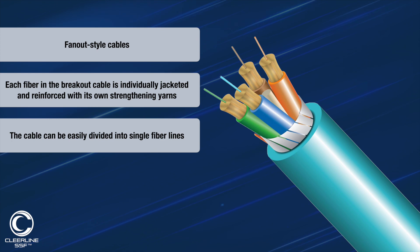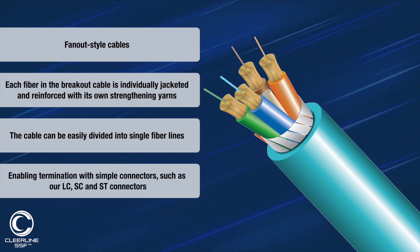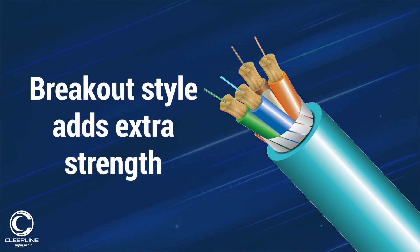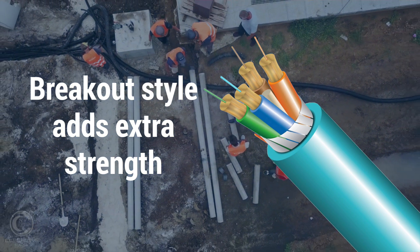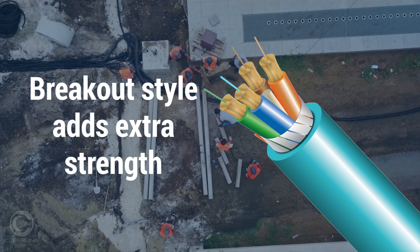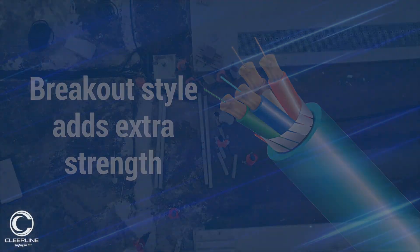This enables termination with simple connectors such as LC, SC, and ST connectors. Compared to micro distribution style cable comprised of loosely bundled fiber strands in the same jacket, breakout cable adds strength to the strands for ruggedized drops. Breakout cable is often used for short riser and plenum applications, as well as for use in conduits.